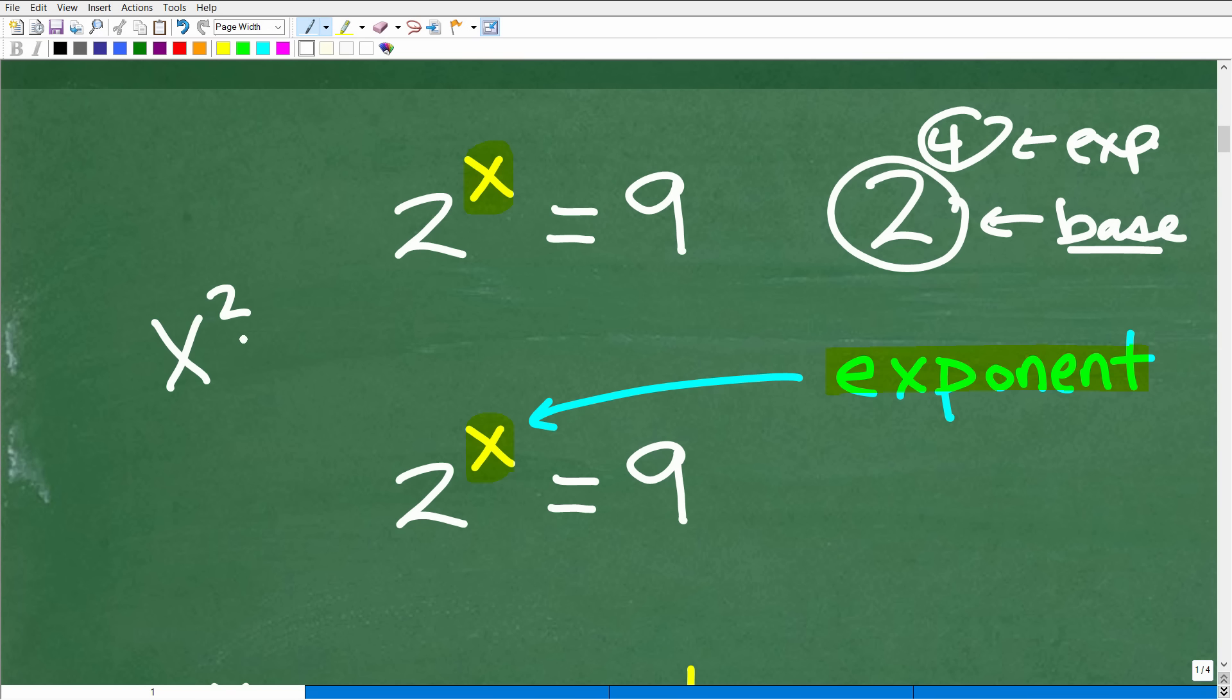What if we have x squared is equal to 9? So we're just taking the unknown value, we'll make that the base, and we'll kind of flip-flop the base and the exponent here. So x squared is equal to 9. Hopefully, most of you out there recognize this as a basic quadratic equation, which indeed it is, because all we have to do here is take the square root of both sides. But this is not this type of equation. What we have here, again, is the unknown value, the x, is in the exponent location. Hence, this is what we call an exponential equation.